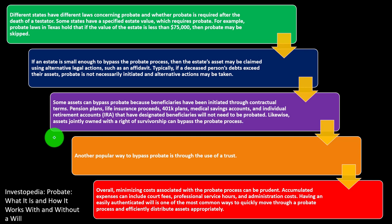Overall, minimizing costs associated with the probate process can be prudent. Accumulated expenses can include court fees, professional service hours, and administration costs. Having an easily authenticated will is one of the most common ways to quickly move through the probate process and efficiently distribute assets appropriately.